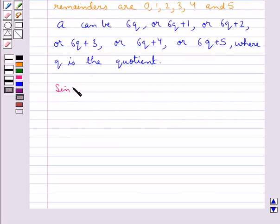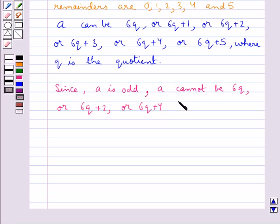Since a is odd, a cannot be 6q or 6q plus 2 or 6q plus 4 since they are divisible by 2.